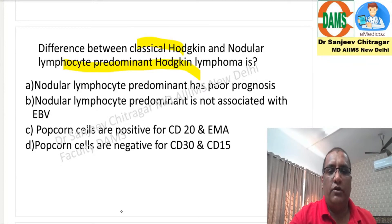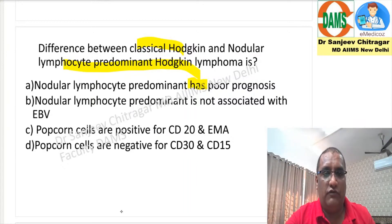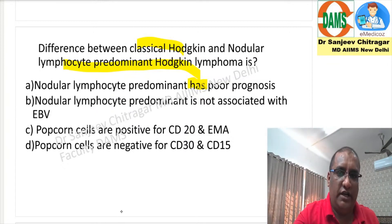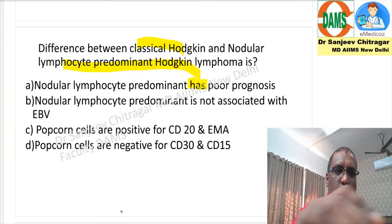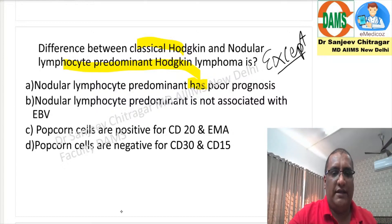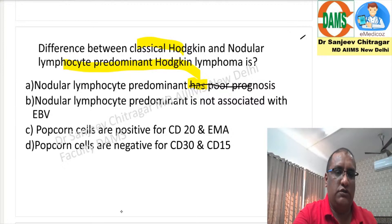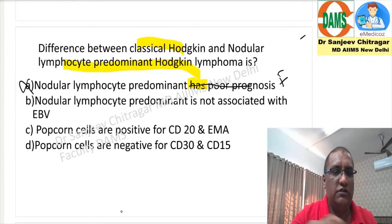So nodular lymphocyte predominant has poor prognosis — is or except. I'm not very clear about what was the question, but many of you said 'except' was the question format. So which is different, or except, or which is not true — that was basically the question asked. So nodular lymphocyte predominant has poor prognosis — this is a false statement.